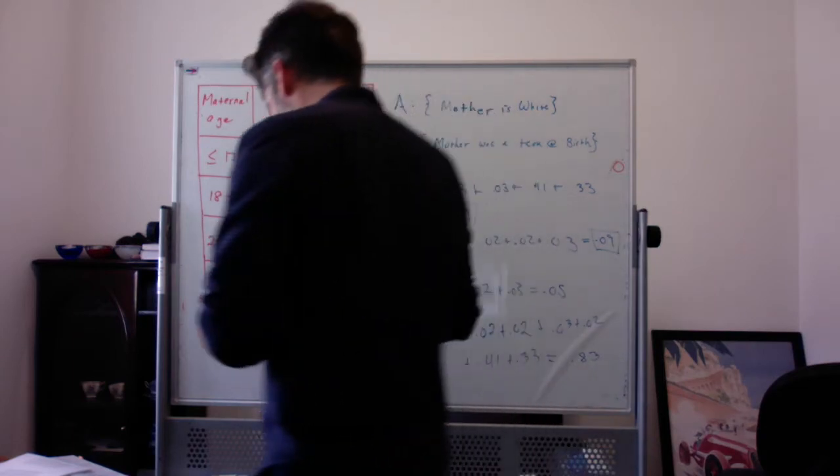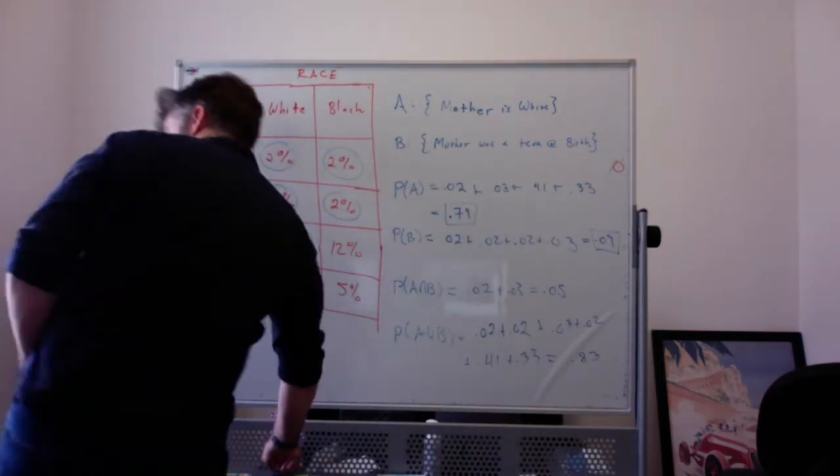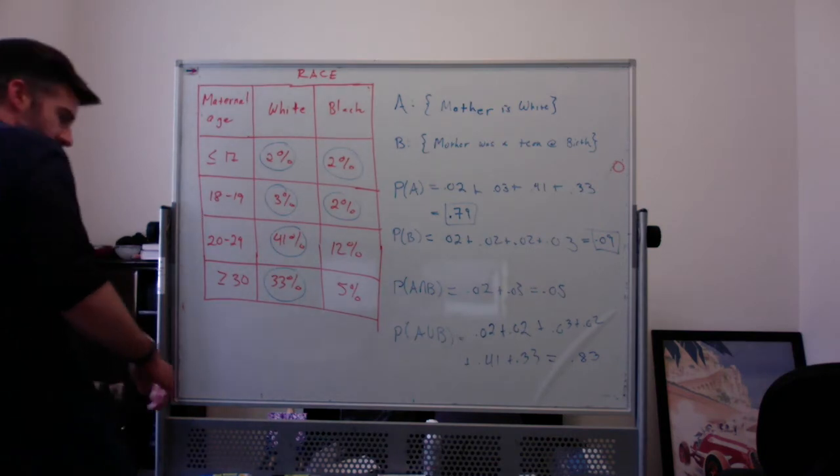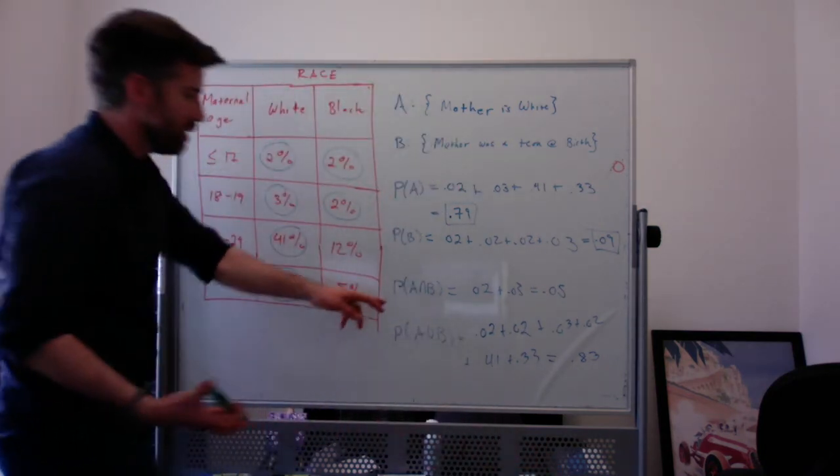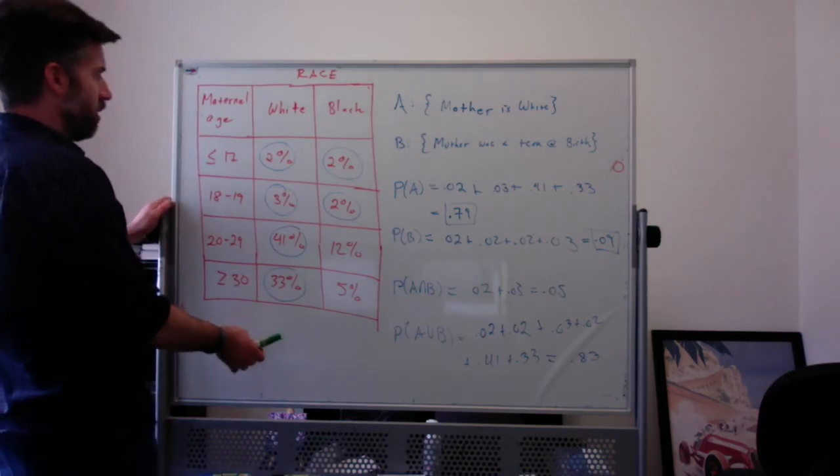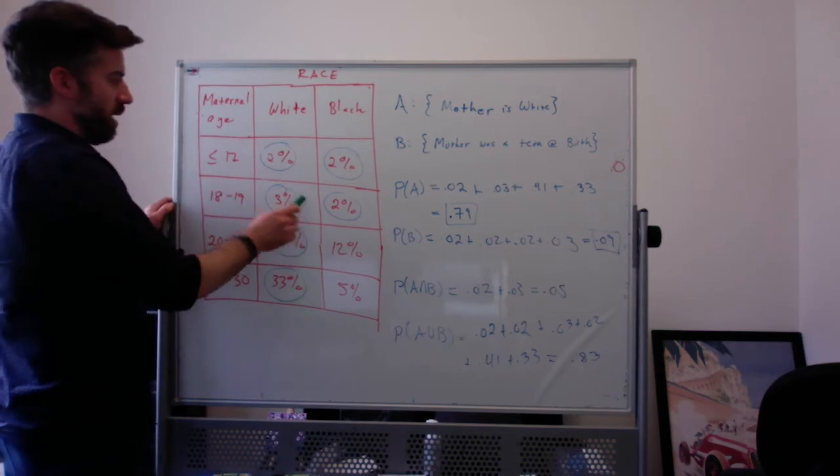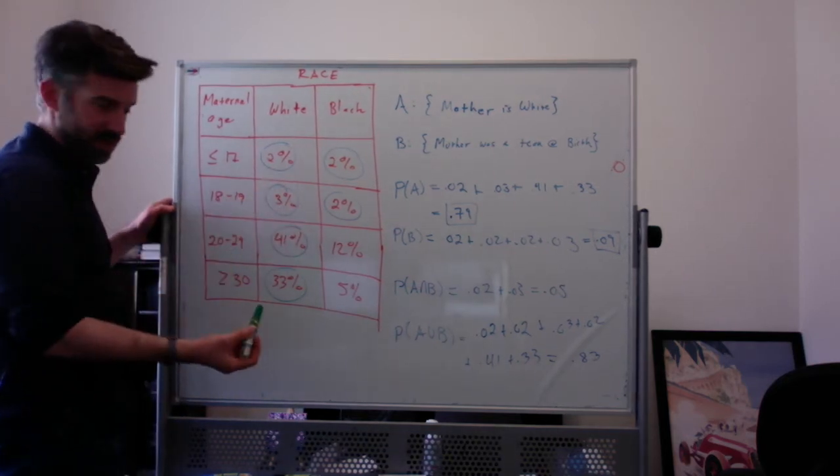Just as an aside, one way you could calculate this, which is worth knowing, is using the inclusion-exclusion theorem, where you say the union is all of the A stuff plus all of the B stuff minus the intersection, because that got double-counted.